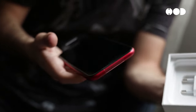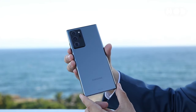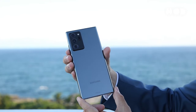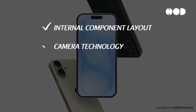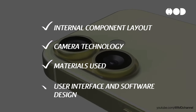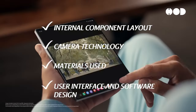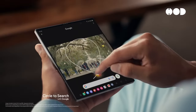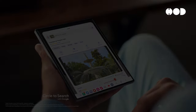Welcome to our channel. Today, we're diving into the fascinating world of smartphone design, focusing on the iPhone and Samsung Galaxy series. We'll explore the internal component layout, camera technology, materials used, user interface, and software design. Let's break down the design decisions and implementations that make these devices remarkable.